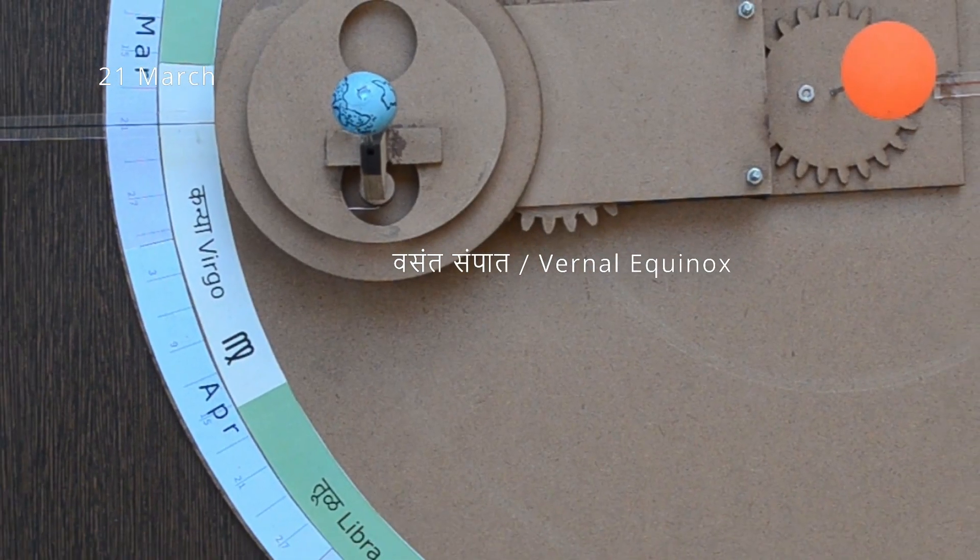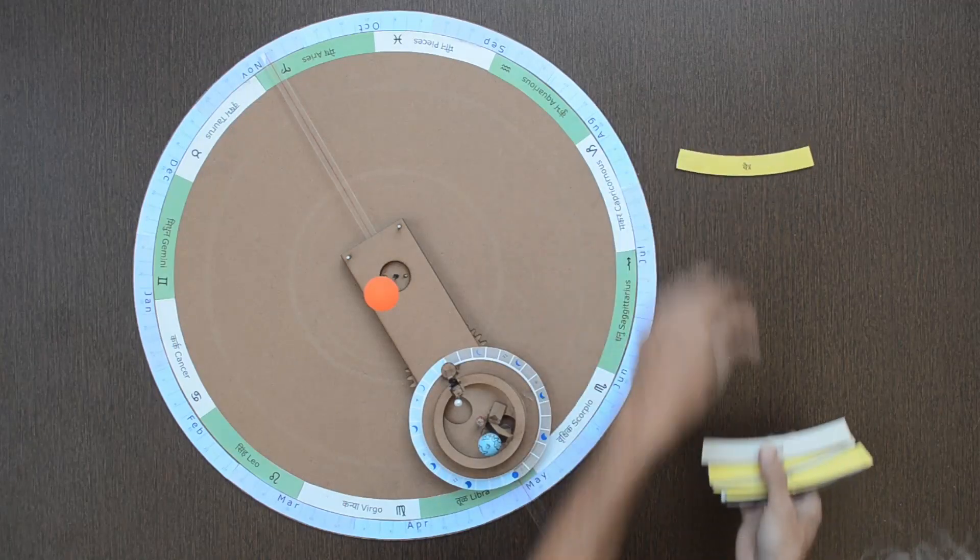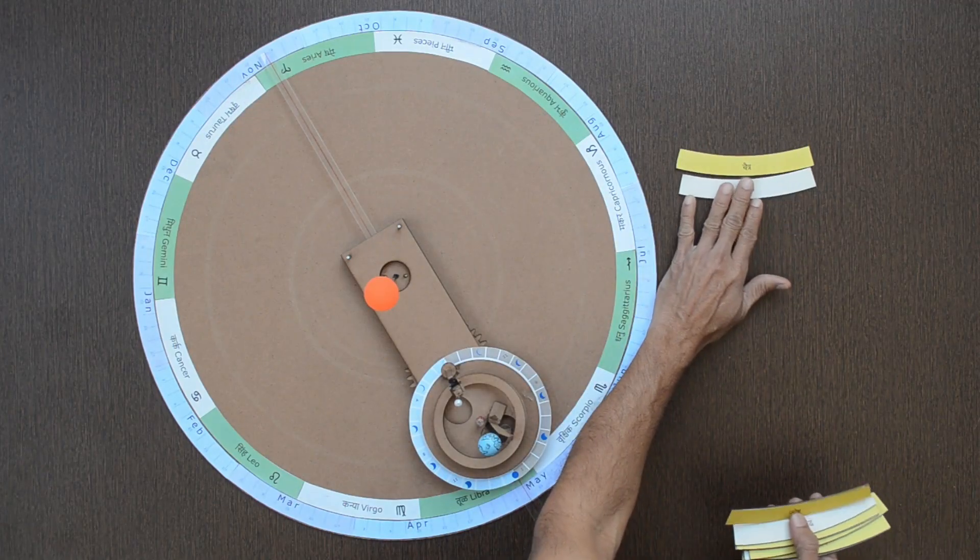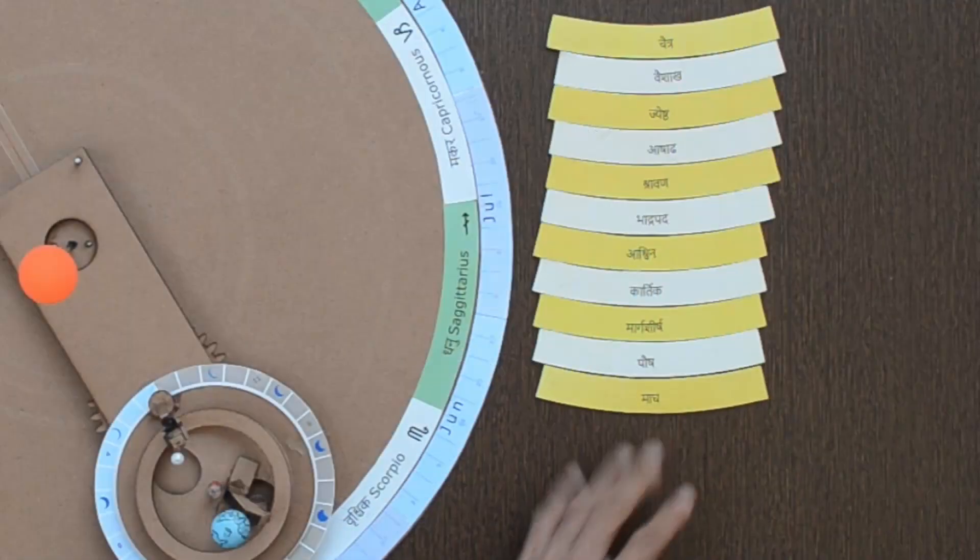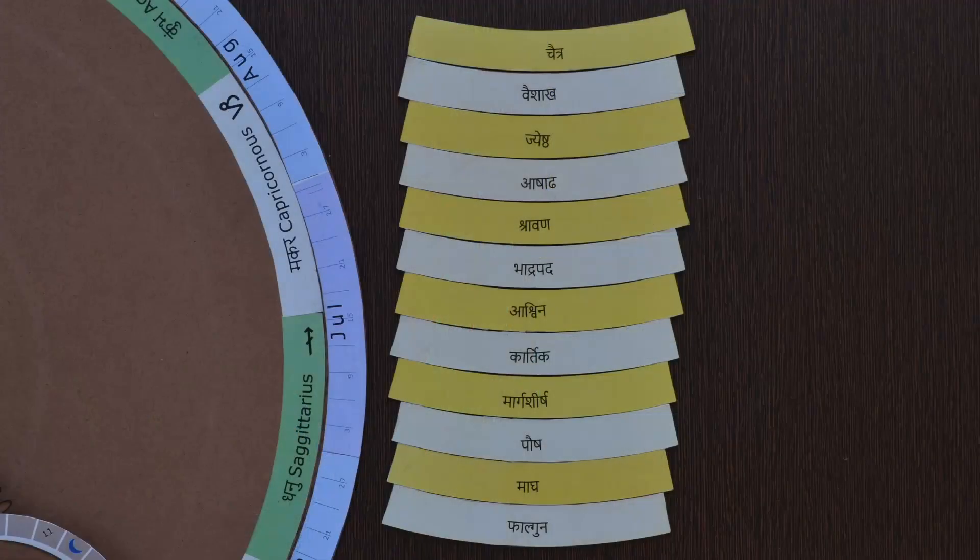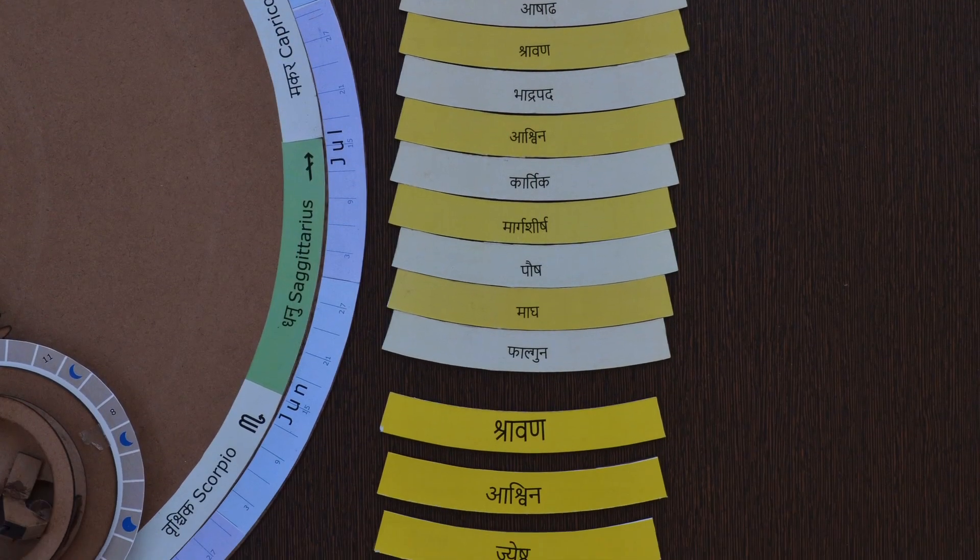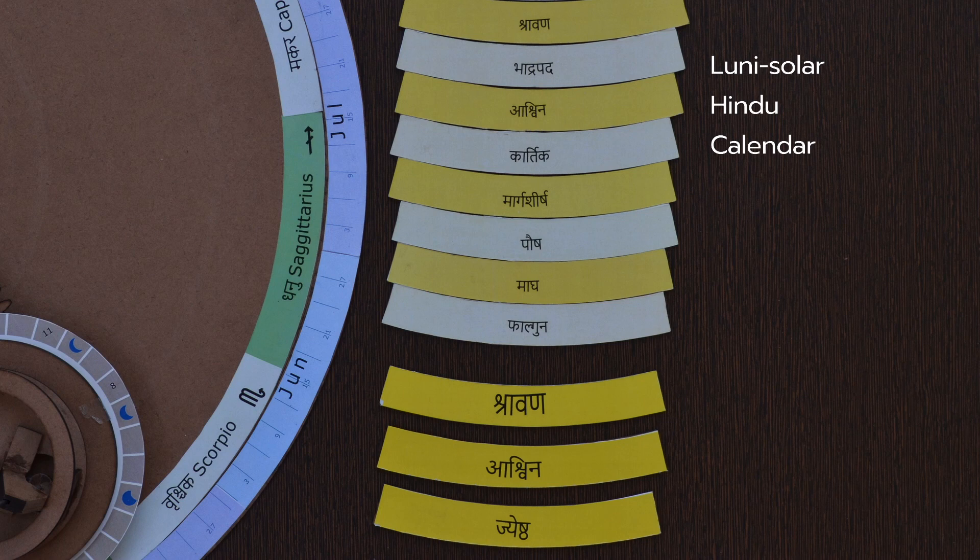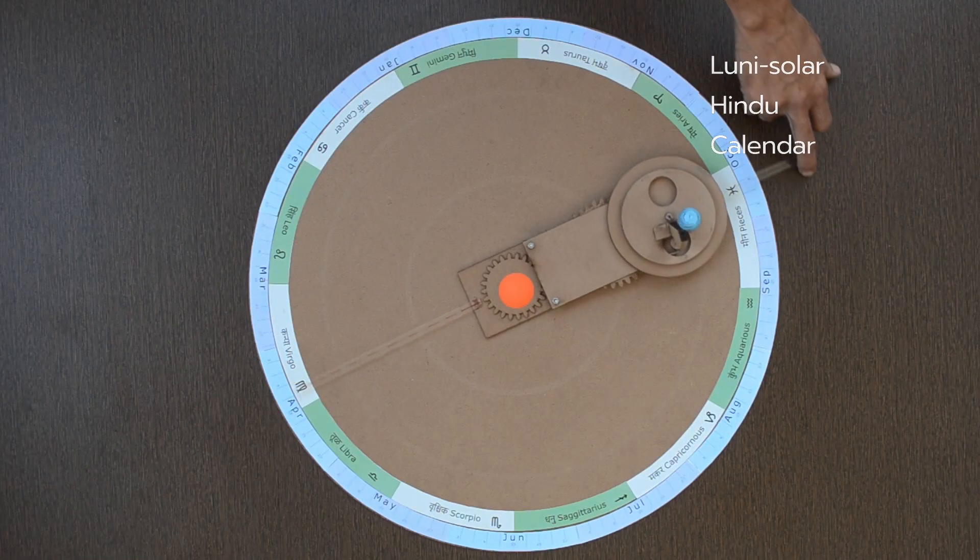Let us understand how months of the Hindu calendar are decided with the help of this model. Though the Hindu calendar is based on the cycles of the moon, it tries to accommodate the solar year as well in a single framework.